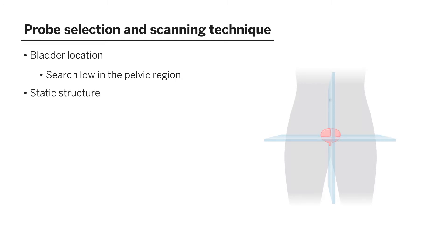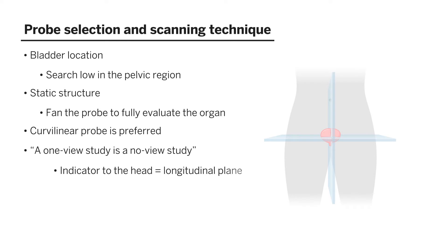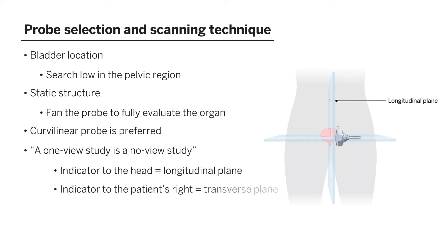It is a static structure. When we have a static structure, we want to fan through it fully to evaluate the entirety of the organ, as opposed to a dynamic structure where we want to stay still and catch how it's moving. Because of the depth and location in the pelvis, curvilinear probes are often preferred. Remember that a one-view study is a no-view study. With the indicator to the patient's head, we are in the longitudinal plane, and with the indicator to the patient's right, we are in the transverse plane.